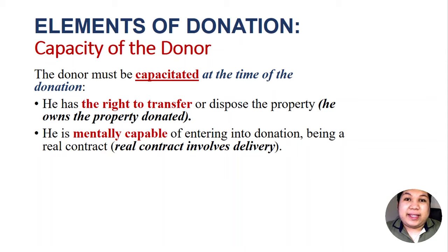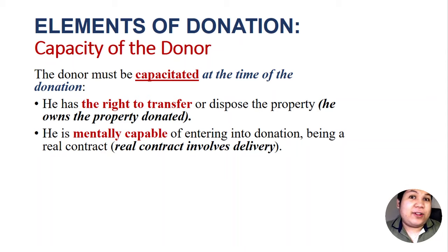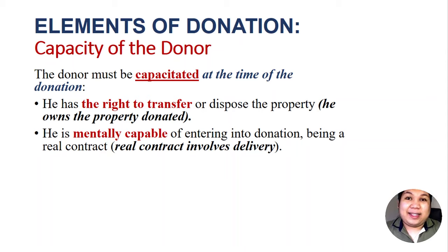The second aspect of capacity is that the donor must be mentally capable of entering into donation, being a real contract. Donation as a real contract involves delivery of the thing promised to be donated. The donor must be capacitated to give up the ownership of the property donated. When I say mentally capable, meaning he is capable of entering into a contract, he can legally consent to the donation, and there is no undue influence on the part of the donor.